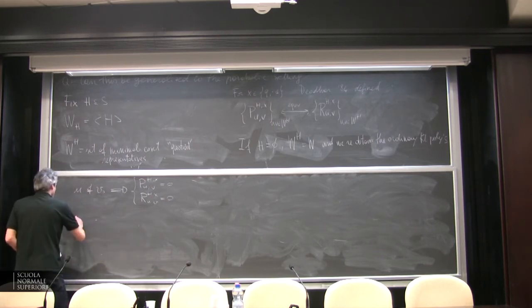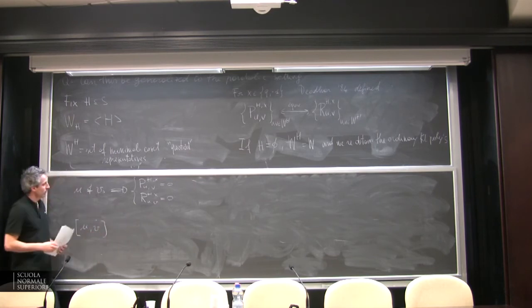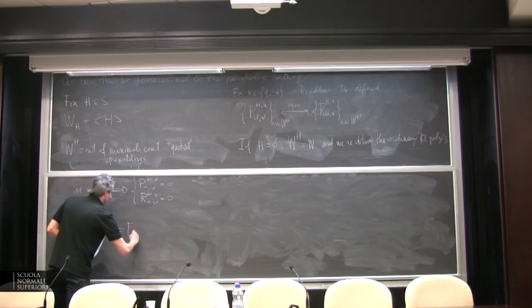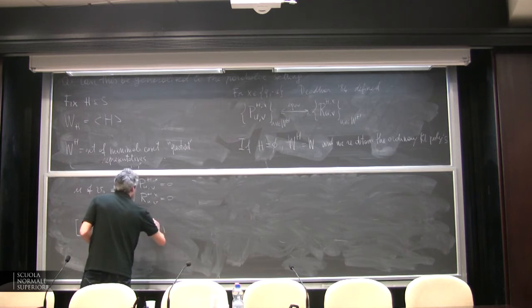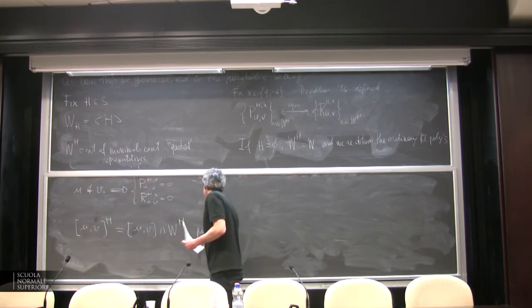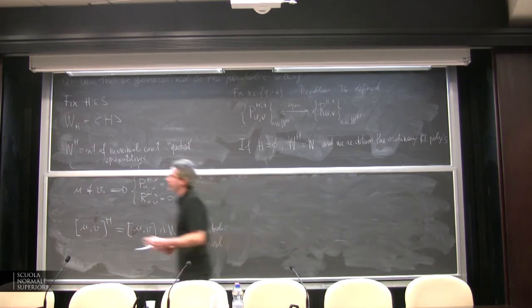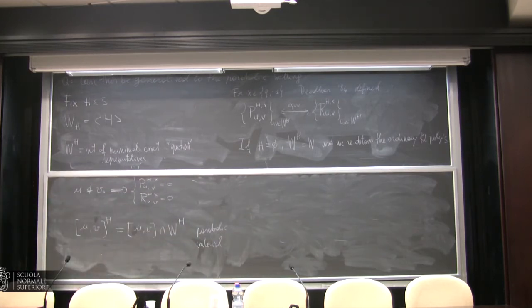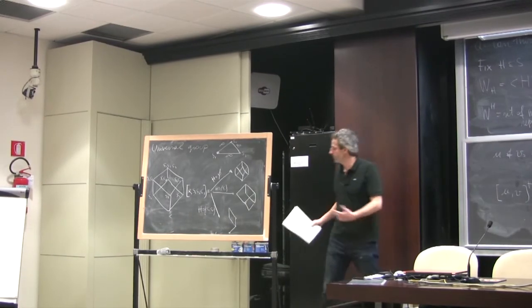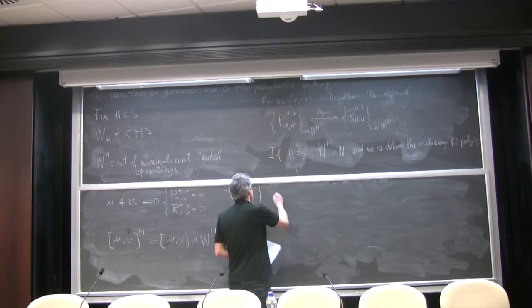We have one parabolic P-polynomial for each interval in the quotient W^H. This interval in the quotient order can be quite general: if H is empty we obtain the same interval as before, but otherwise we obtain something that could be strange — for example, having an odd number of elements so there are no matchings of this interval. The parabolic analog of the combinatorial invariance conjecture is: if the parabolic intervals are isomorphic, then the polynomials are equal.